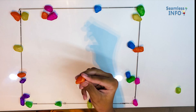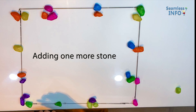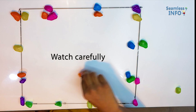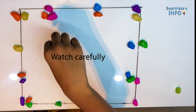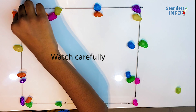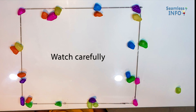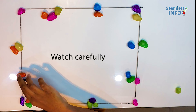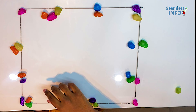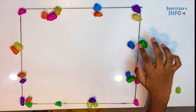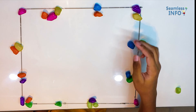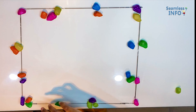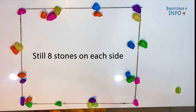Now I am going to add this orange stone right here. And now I am going to change this purple stone here, this green stone here and this orange stone here. And then I am going to take this yellow stone here, this pink stone here and this orange stone right here. Now let us count how many stones are there in each side. We have 1, 2, 3, 4, 5, 6, 7, 8 stones on the left side. On the right side we have 1, 2, 3, 4, 5, 6, 7, 8. We have 1, 2, 3, 4, 5, 6, 7, 8 on the top side. And we have 1, 2, 3, 4, 5, 6, 7, 8 stones on the bottom side.